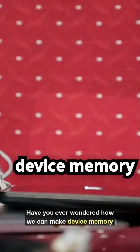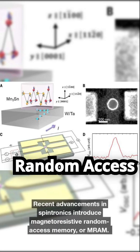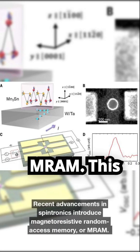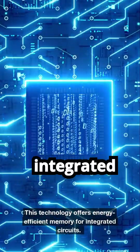Have you ever wondered how we can make device memory faster and more efficient? Recent advancements in spintronics introduce magnetoresistive random access memory, or MRAM. This technology offers energy-efficient memory for integrated circuits.